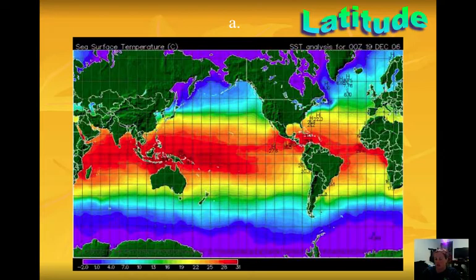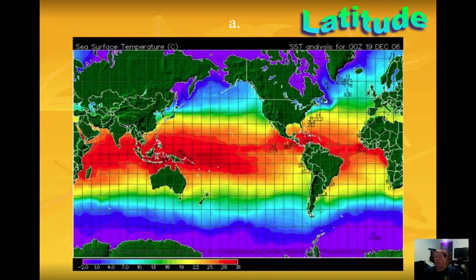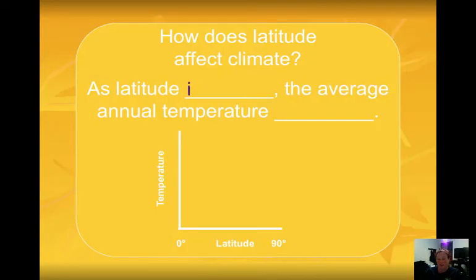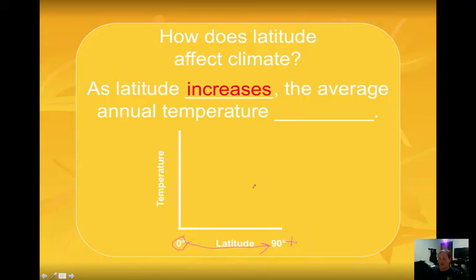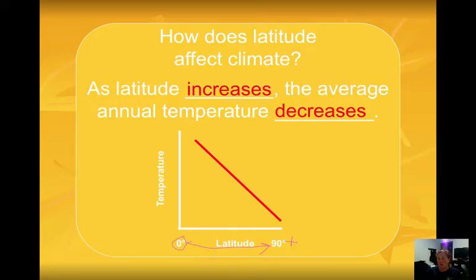Looking at this thermal imaging of Earth's surface, you can see isotherms showing different temperatures. Temperatures are generally warmer near the equator and cooler as you go towards the poles. As latitude increases — going from a lower latitude near the equator towards a higher latitude near the poles — temperature decreases. This is an indirect relationship: as latitude increases, temperature decreases.